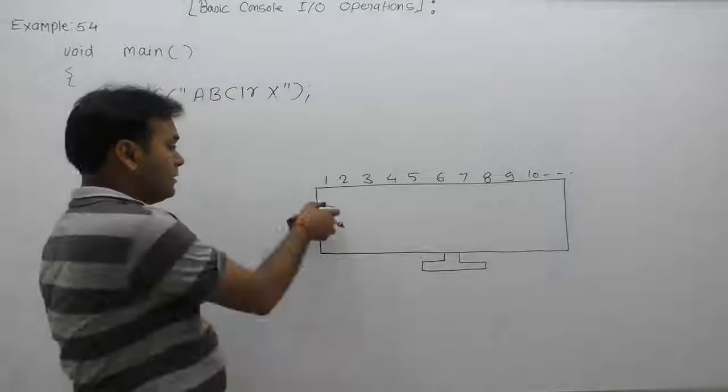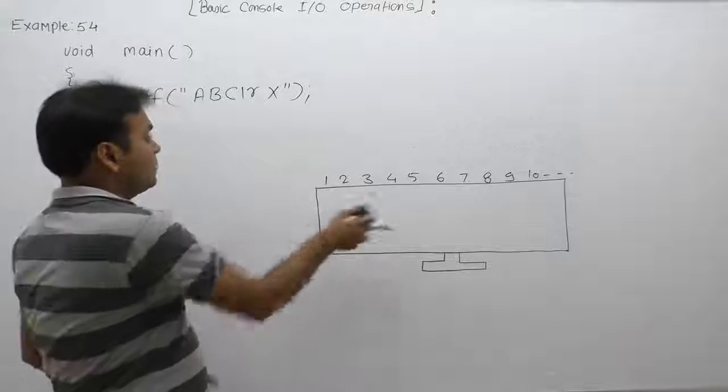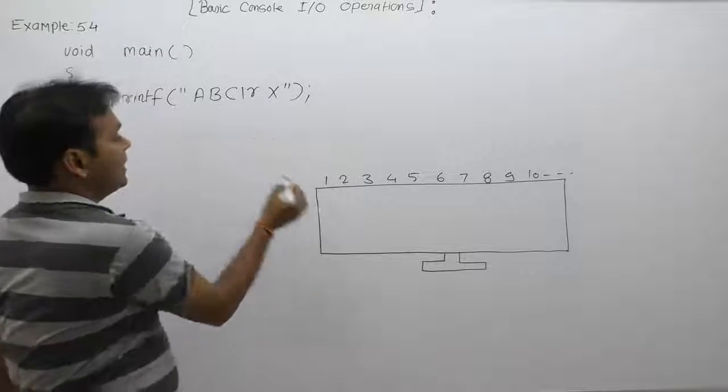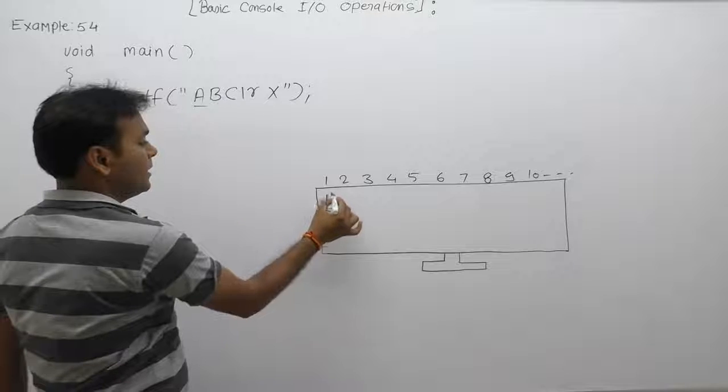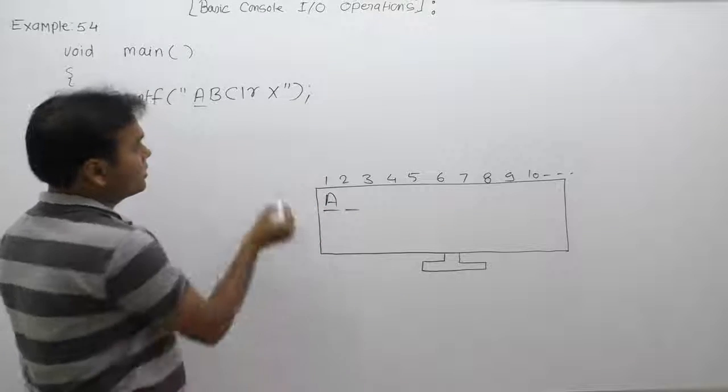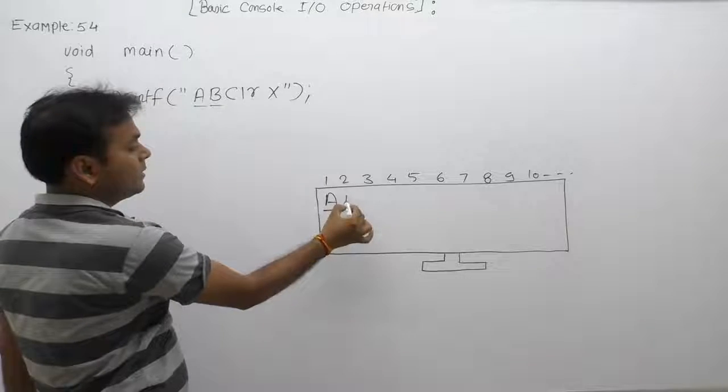Again, next one same as previous example. We are extending here one extra character as X. It will print current position character A. After that, cursor will be available on the next position, then it will print B on the second position.